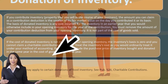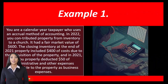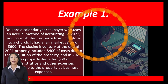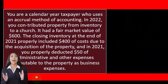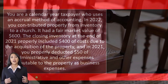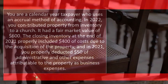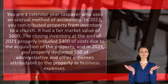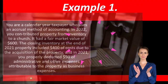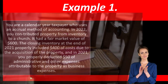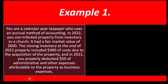See Publication 526, Charitable Contributions, for more information. Example one: you are a calendar year taxpayer who uses an accrual method of accounting. In 2022, you contributed property from inventory to a church — not cash, but inventory. It had a fair market value of $600. The closing inventory at the end of 2021 included $400 of cost due to the acquisition of the property.